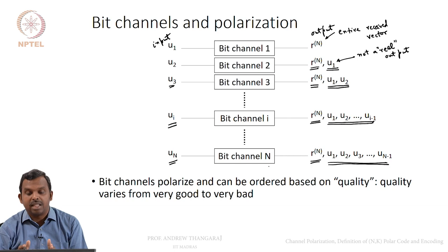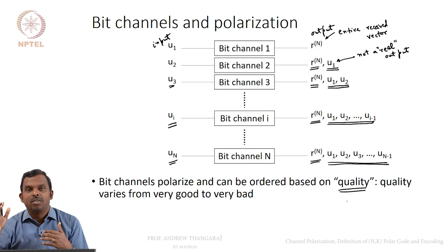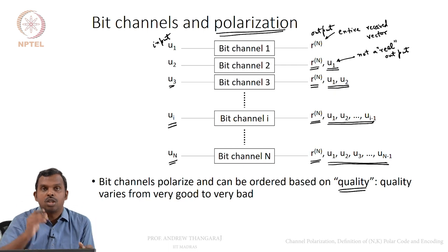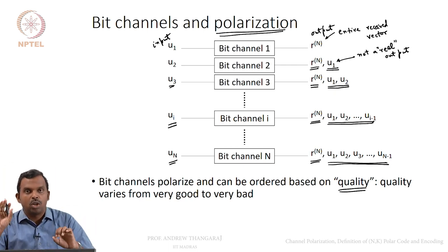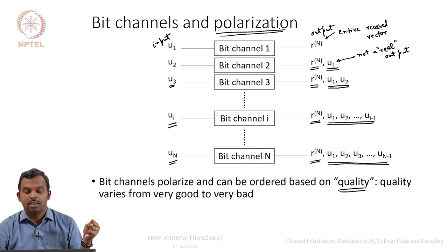You can study these bit channels carefully and order them based on quality. The quality varies a lot, from very good to very bad. As you increase N, they either become very very good or very very bad — there are literally no channels that are mediocre, nothing in the middle. All bit channels either become very very good or very very bad. This is the essence of polarization: you either go to the north pole or the south pole, one of two things, nothing in the middle.